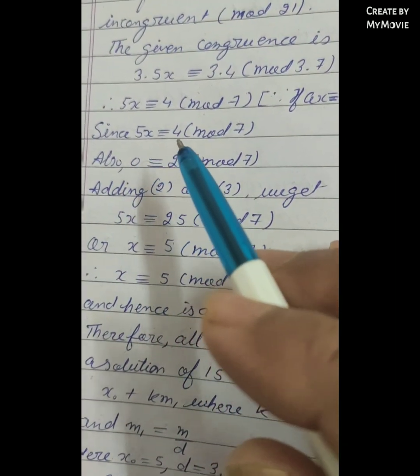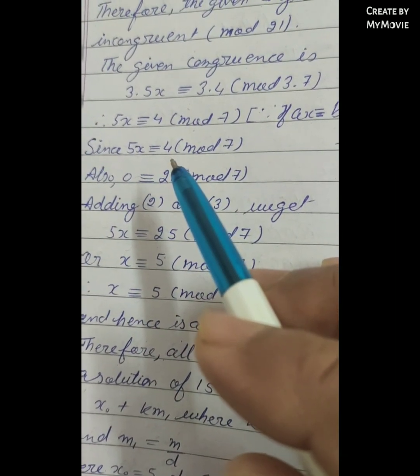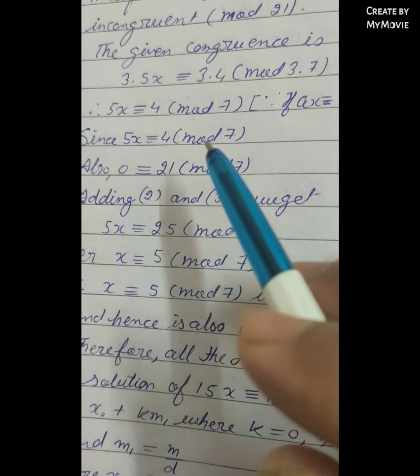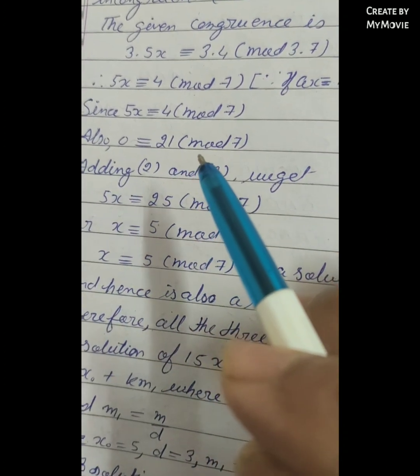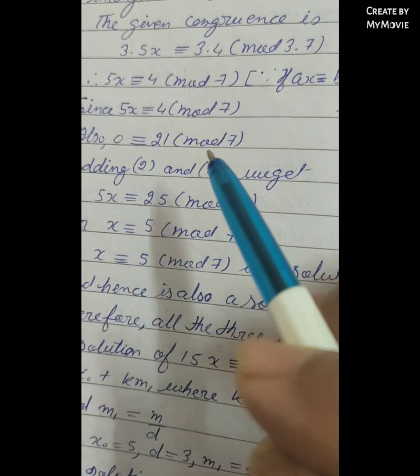Since 5x ≡ 4 (mod 7), this is equation 2. Also 0 ≡ 21 (mod 7).